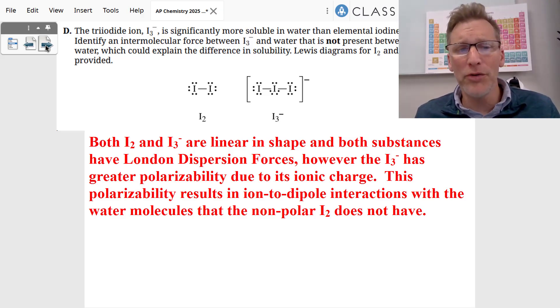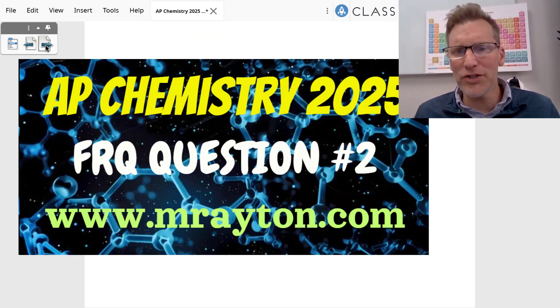It is the ion to dipole interactions. They both are linear. They both have London dispersion forces. However, the I3 minus has greater polarizability due to its ionic charge, due to that negative charge. And so what is that going to result in? Ion to dipole interactions with the water molecules. The nonpolar, the elemental iodine does not have it. And that is question number two for AP Chemistry 2025.